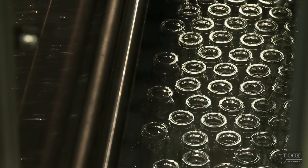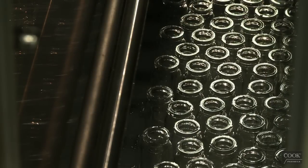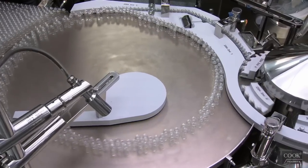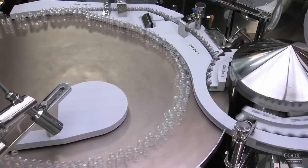Upon leaving the washer, the vials enter the depyrogenation tunnel which is equipped with a sterilizable cool zone. The depyrogenation tunnel feeds vials onto a turntable, staging them to go from continuous motion to the walking beam intermittent motion.